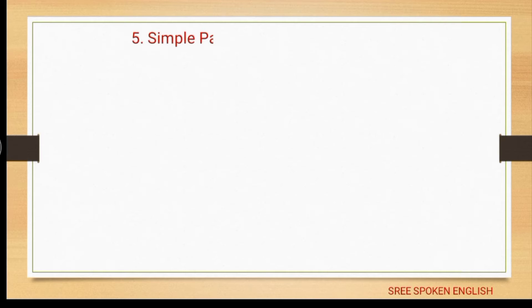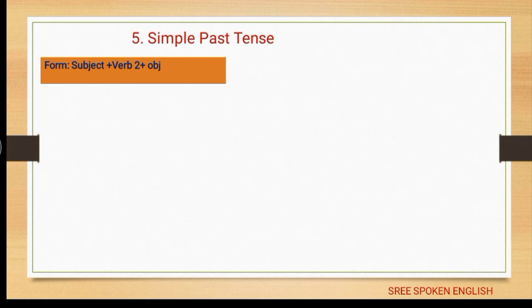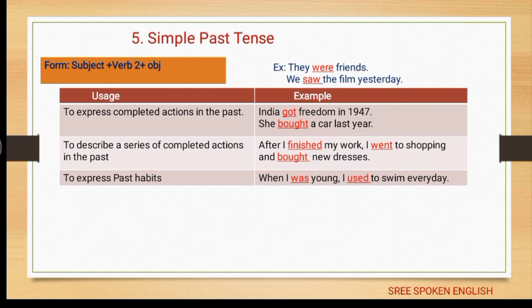Moving on to the next category: simple past tense. The form is: subject + verb second form + object. Example: 'They were friends' — the auxiliary verb indicates simple past. Another example: 'We saw the film yesterday' — 'saw' is the second form of 'see'.